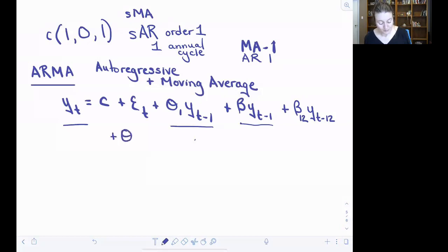I would add my coefficient, and then I would add that error component from 12 months previous or 12 lags before. So in our NDVI data, we saw a one-annual cycle signal, so that 12-month signal, but we also saw the 24 signal.